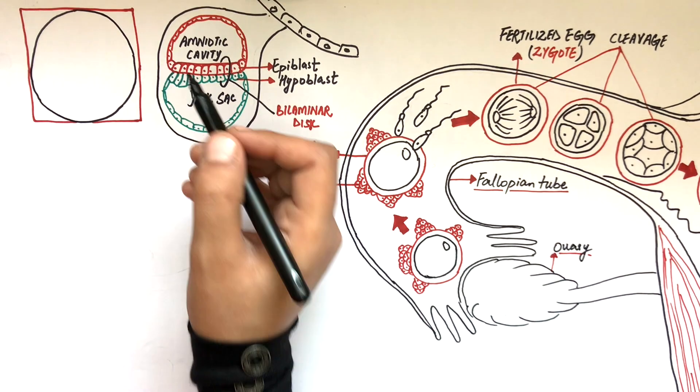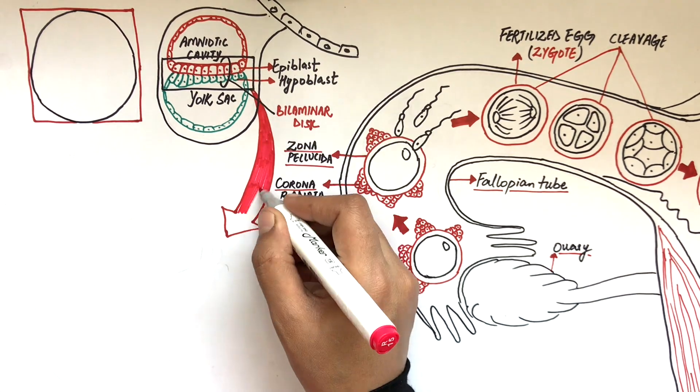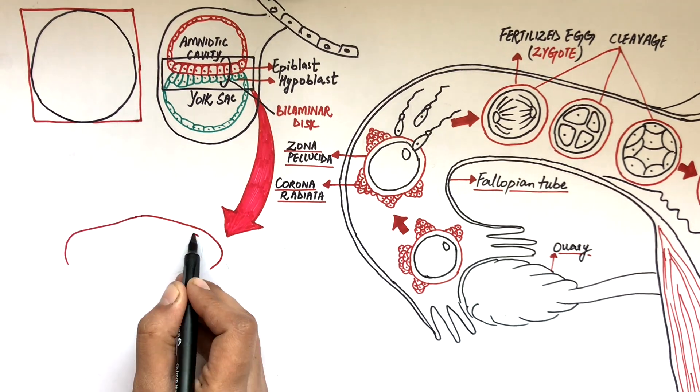If we make a cut at the amniotic and the yolk sac and focus on this bilaminar disc only, upon a lateral superior view it will look something like this.